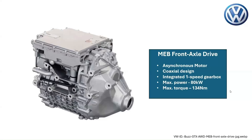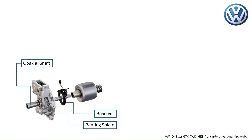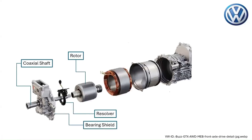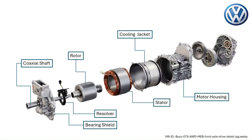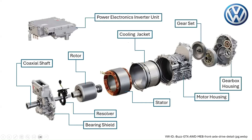Deep dive into the MEB front axle drive unit of the Volkswagen ID Buzz. Firstly, let's examine the rotating component of the electric motor in the front axle drive. This component consists of the coaxial shaft, bearing shield, resolver, and rotor. Then, the stationary part of the electric motor, which is mainly the stator, cooling jacket, and motor housing. We have the integrated one-speed gearbox system with the gear set and gearbox housing highlighted. Then we have the power electronics inverter unit.